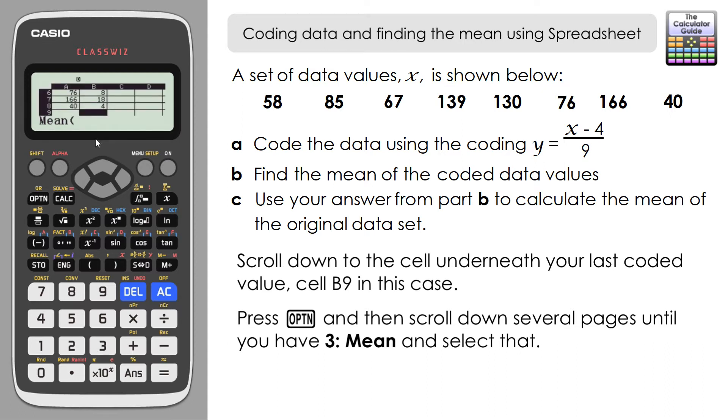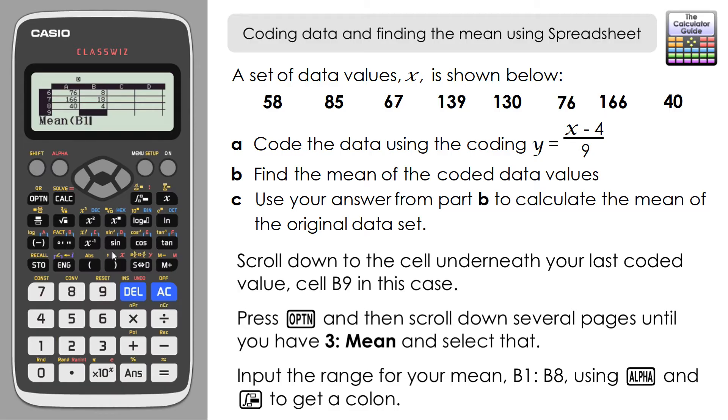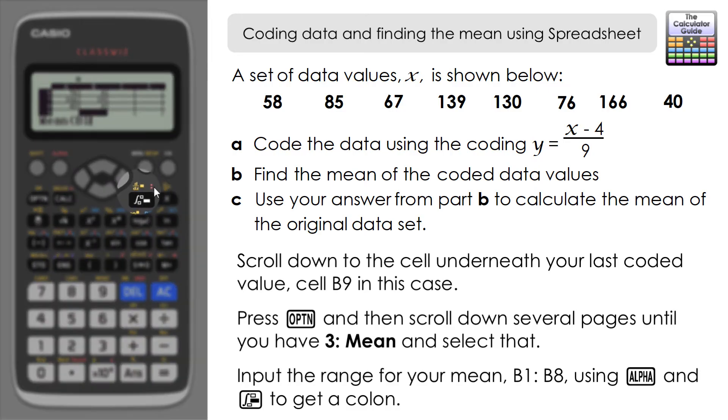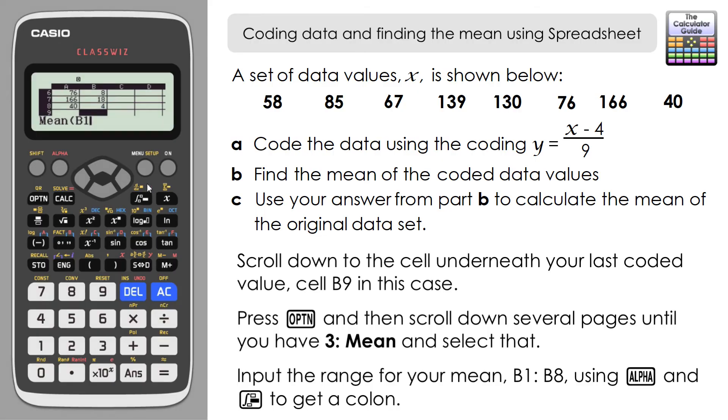Remember that's cell B1 to cell B8. So it's alpha and then B1. To express the first and last cell, you need to put a colon in between. That's alpha and this button, which would be the definite integral button. There's a little colon at the top. So it's alpha then colon.